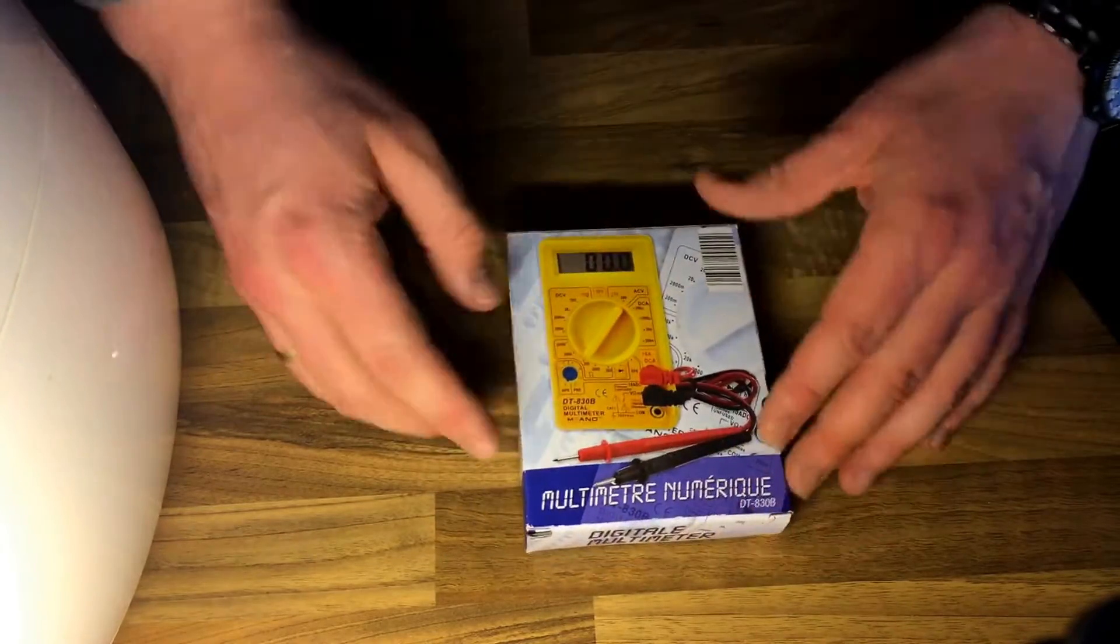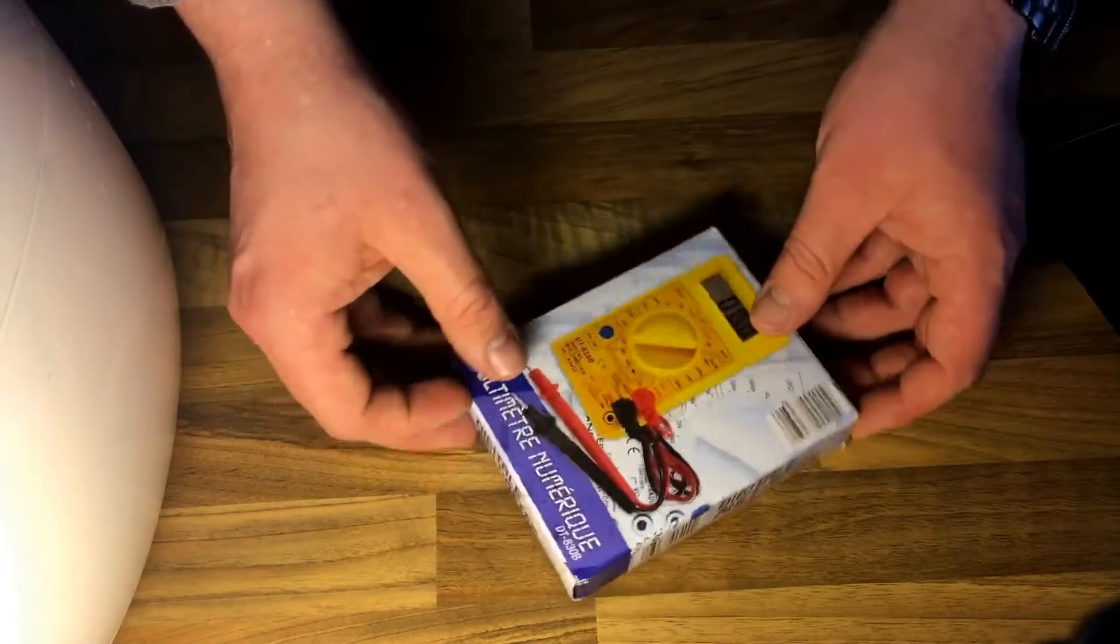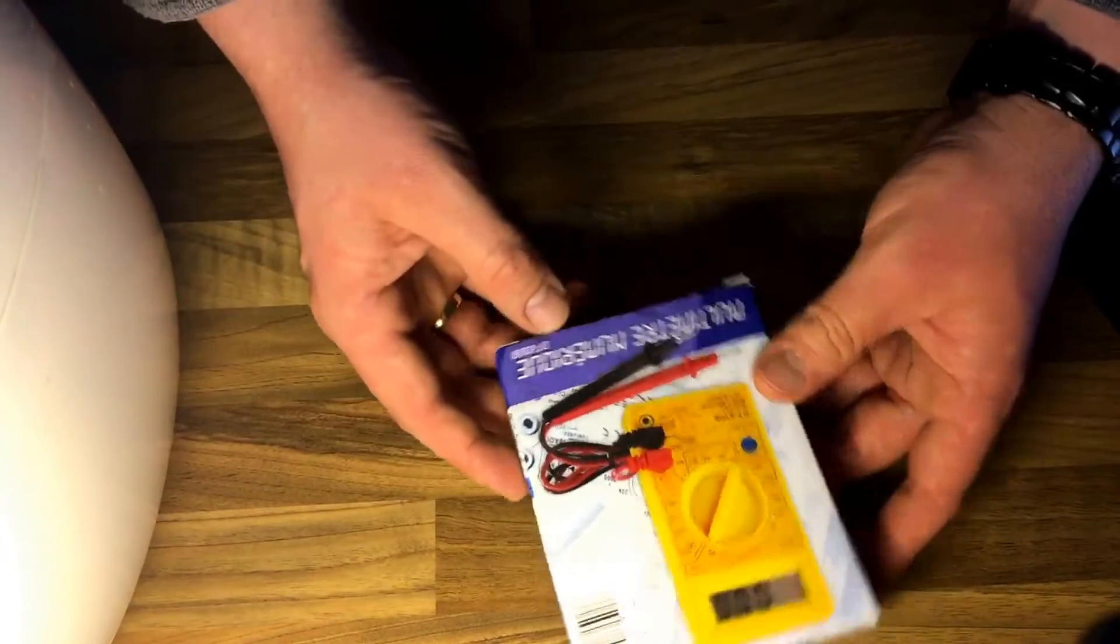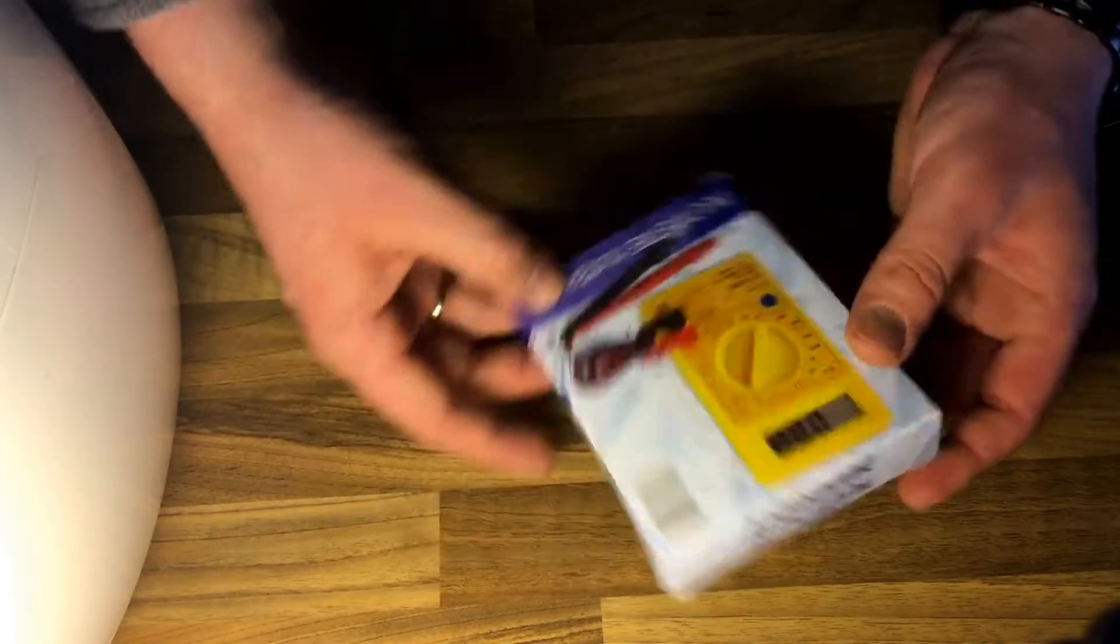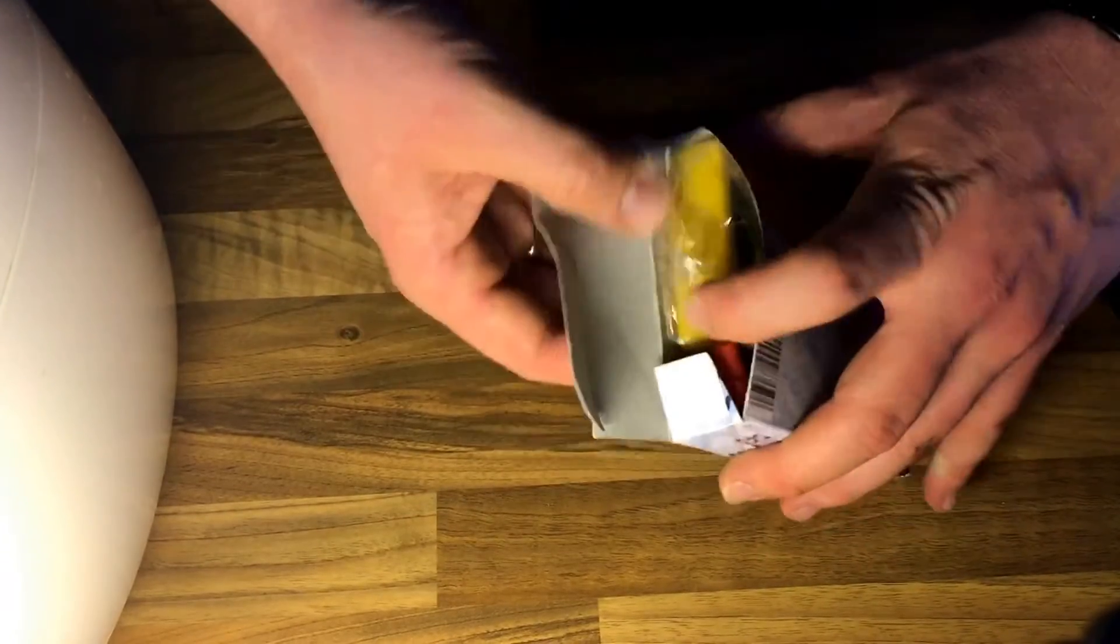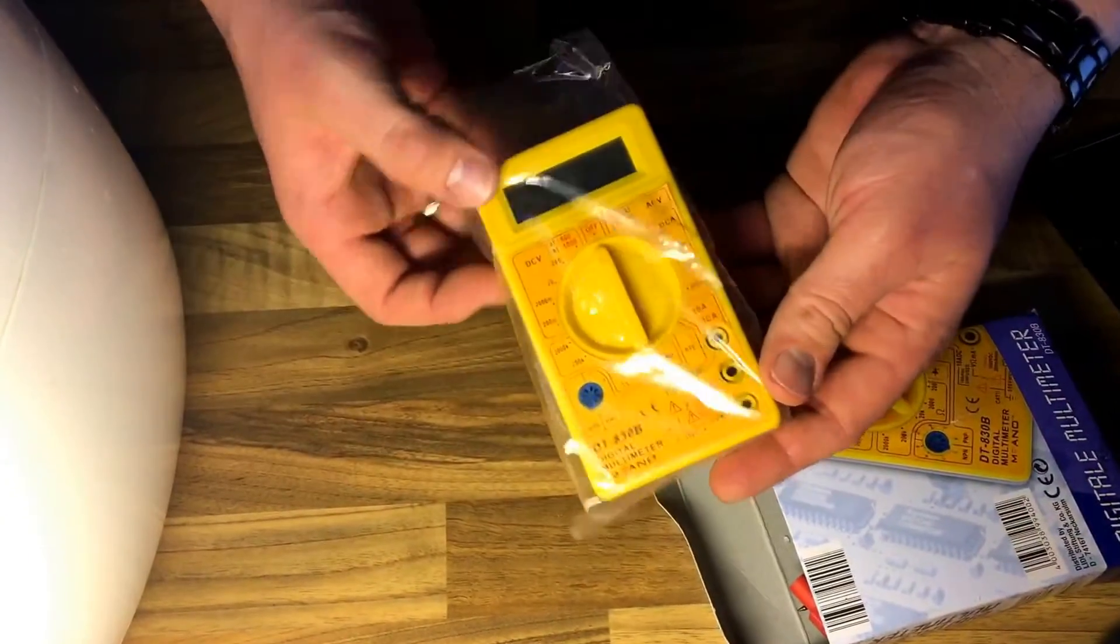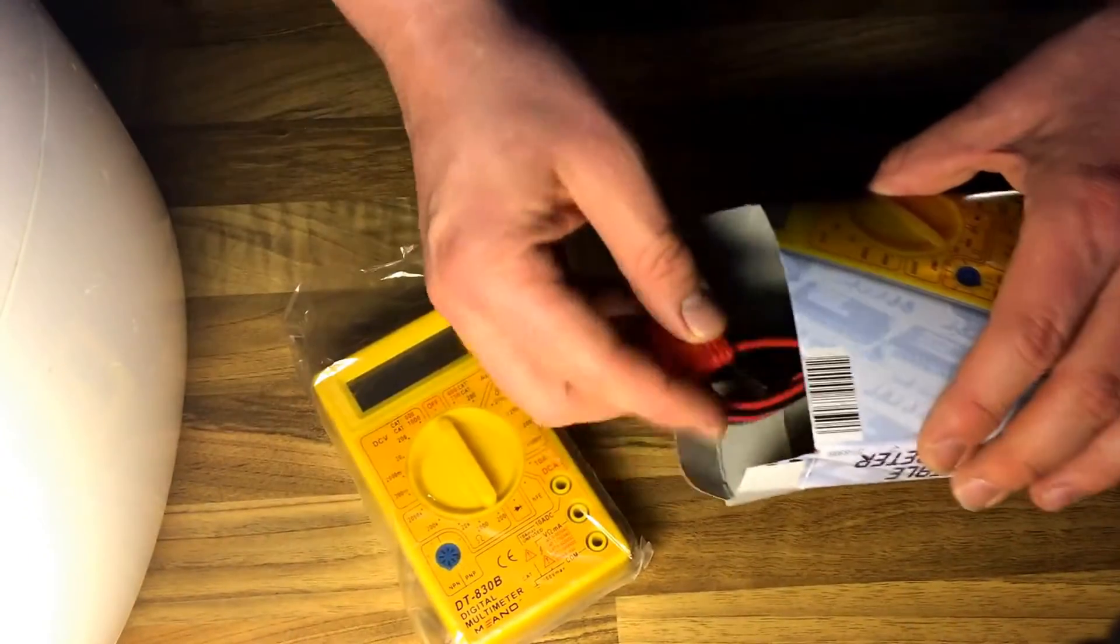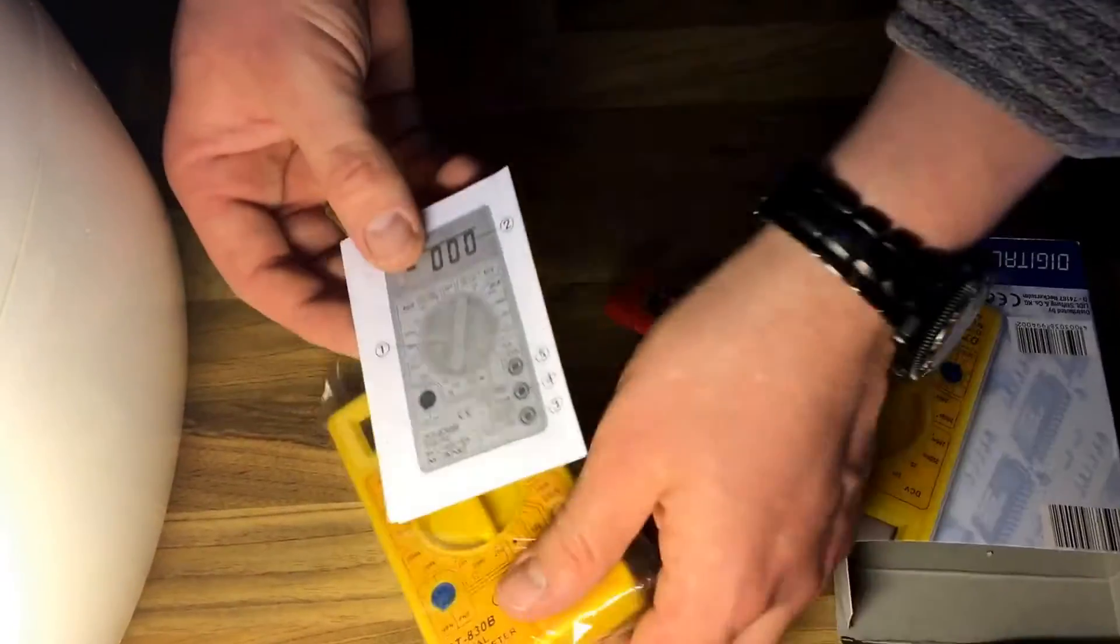It's not so huge, it's not a giant, it's a small version. Okay, it's the DT 830 B model. Let's look inside. The package contains the multimeter and the two wires, and of course I see there is a manual for it. Nice.